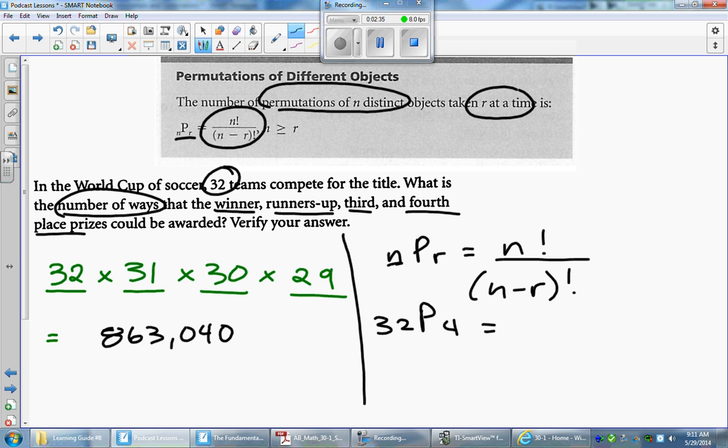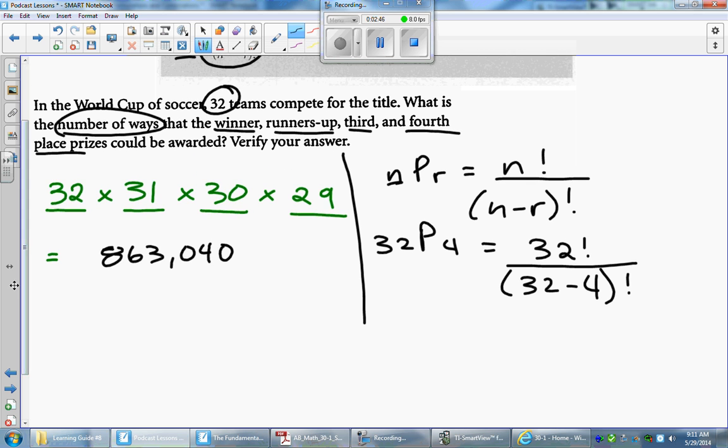Then on the top here, we have N factorial, which is this 32 factorial. On the bottom, I have 32 minus R, which is just 4.